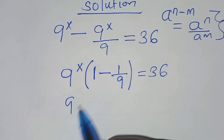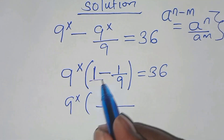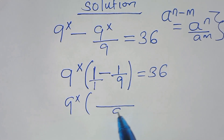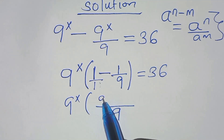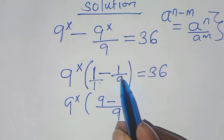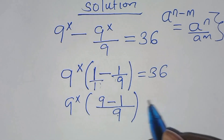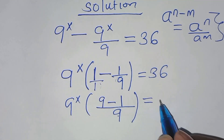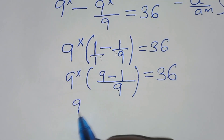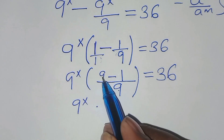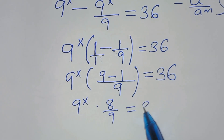So we have 9 to the power x into the parentheses. The LCM here is 9. So 9 divided by 1 is 9 times 1, which is 9, minus 9 divided by 9, which is 1 times 1, giving 1. Closing the bracket, this is equal to 36. So we have 9 to the power x times 9 minus 1, which is 8, over 9. This is equal to 36.